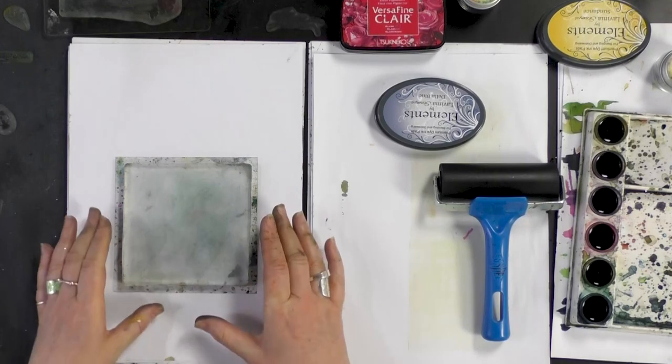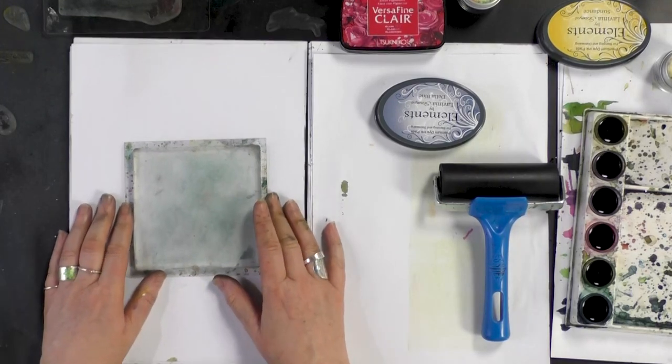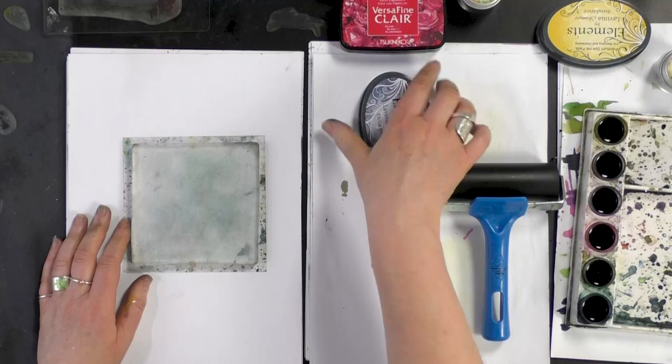We're going to be using one of our gel presses, this is the square one, and we're going to be using the brushes and also our elements inks.